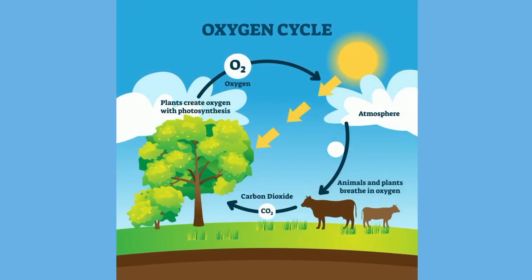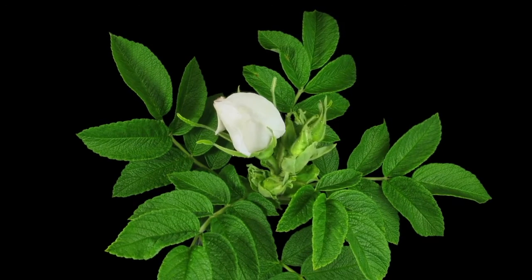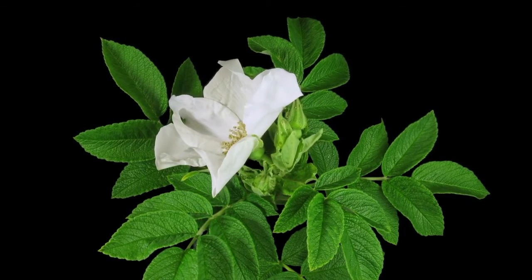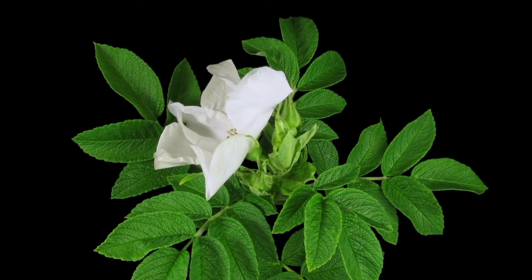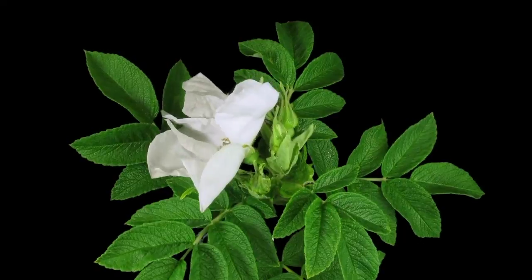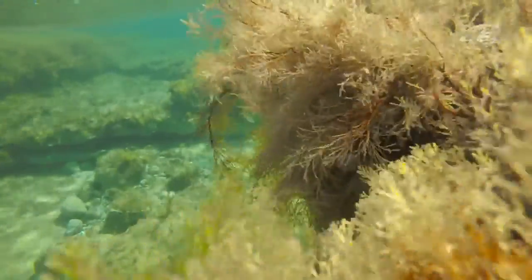Oxygen moves from the atmosphere to the lithosphere and the biosphere. Let's see how oxygen is cycled among these different regions on Earth. Plants, along with phytoplankton and other organisms that carry out photosynthesis, release oxygen into the atmosphere. In fact, marine plants produce most of the oxygen in our atmosphere.